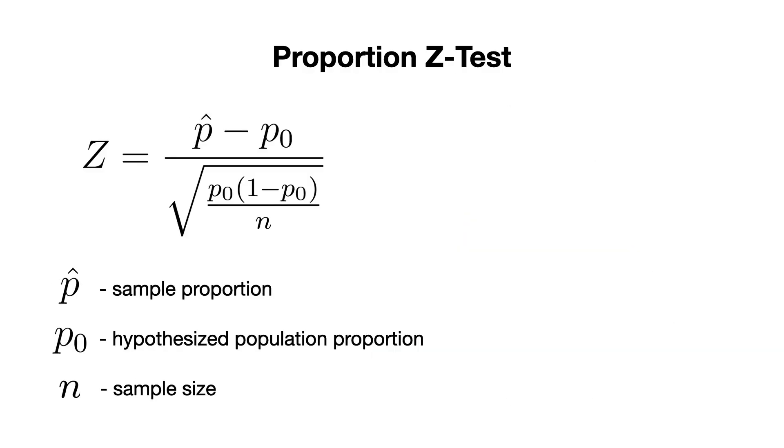And finally, we have the Proportion Z-test, which is particularly useful for testing proportions instead of means. For instance, you could use it to check if the proportion of people liking a new product is different from the company's claim. Since the variance of a proportion can be determined from the mean under the null hypothesis, this makes the Z-test a natural fit here.